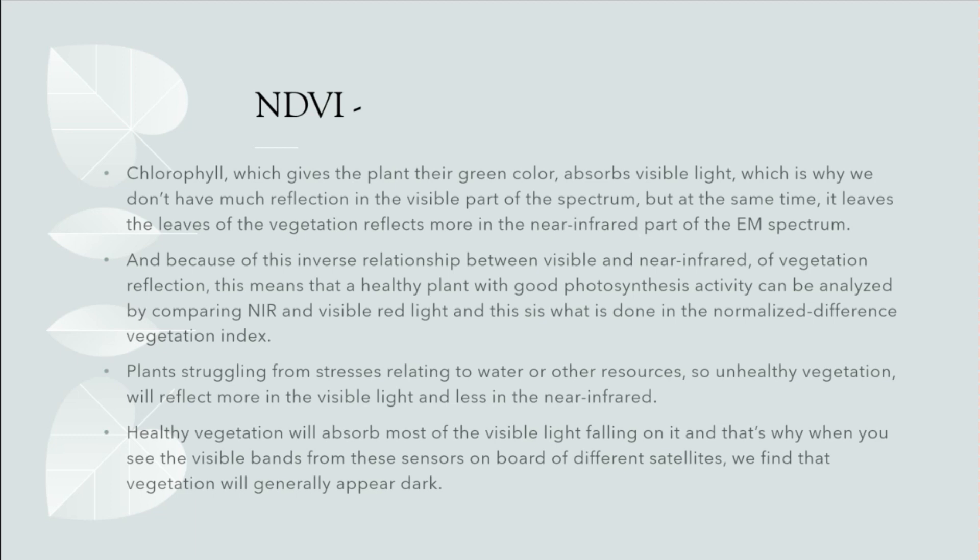Chlorophyll, which gives plants their green color, absorbs visible light, which is why we don't have much reflection in the visible part of the spectrum. At the same time, the leaves of vegetation reflect more in the near-infrared part of the EM spectrum. Plants struggling from stresses relating to water or other resources — unhealthy vegetation — will reflect more in the visible light and less in the near-infrared. Healthy vegetation, inversely, will absorb more of the visible light falling on it, and that's why vegetation generally appears dark in the visible bands captured by satellite sensors.